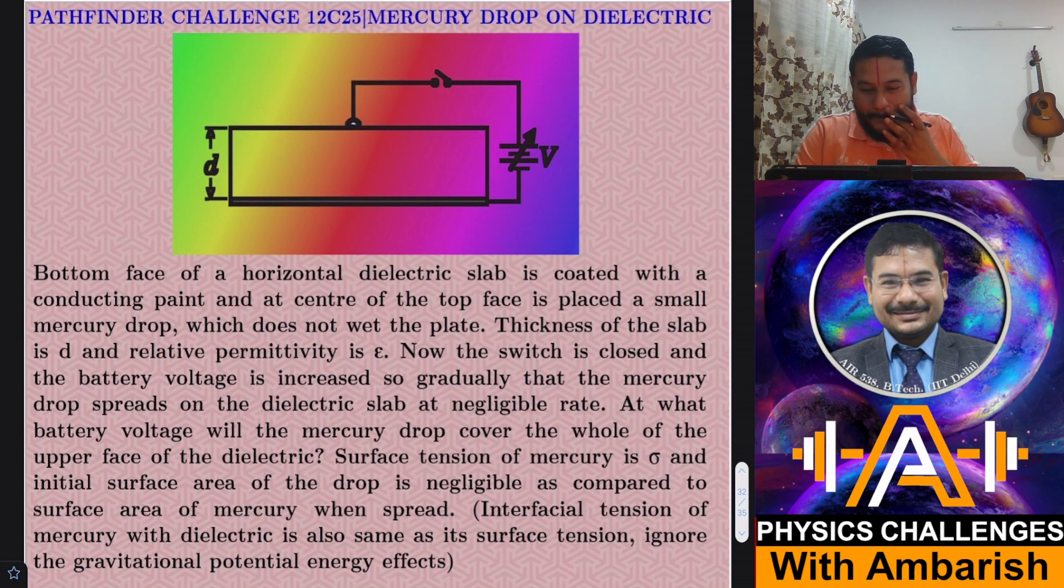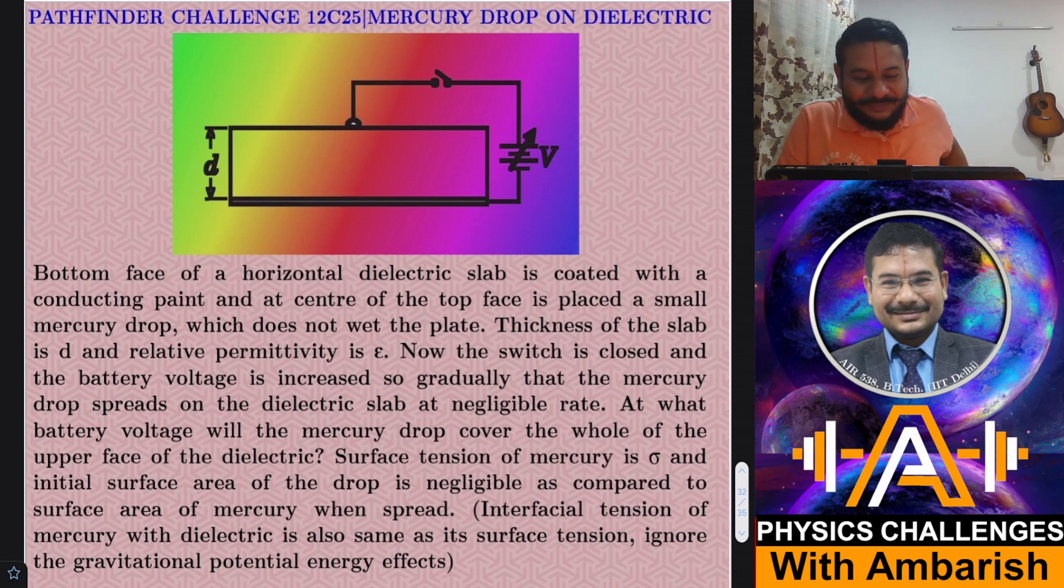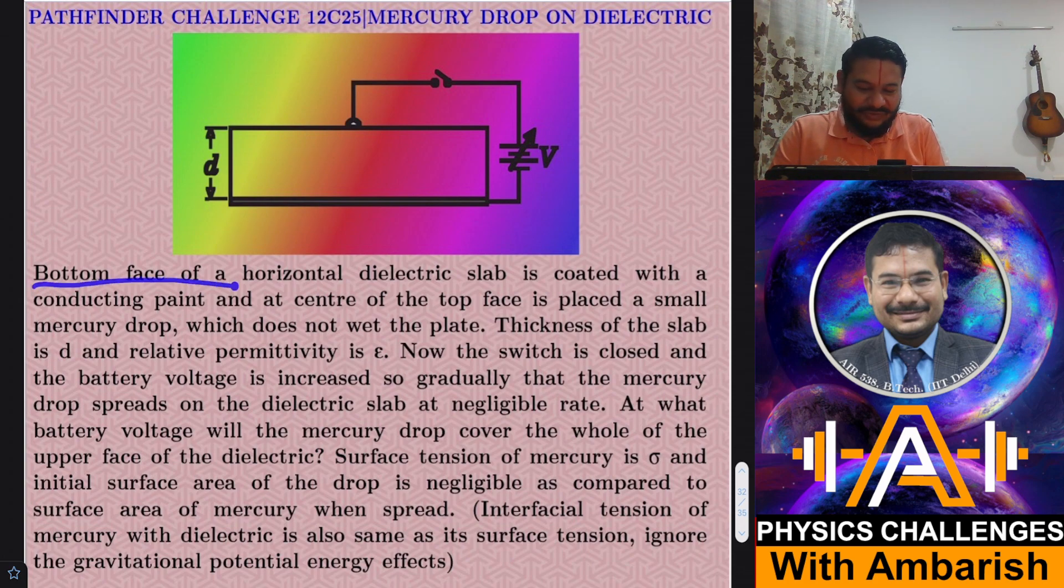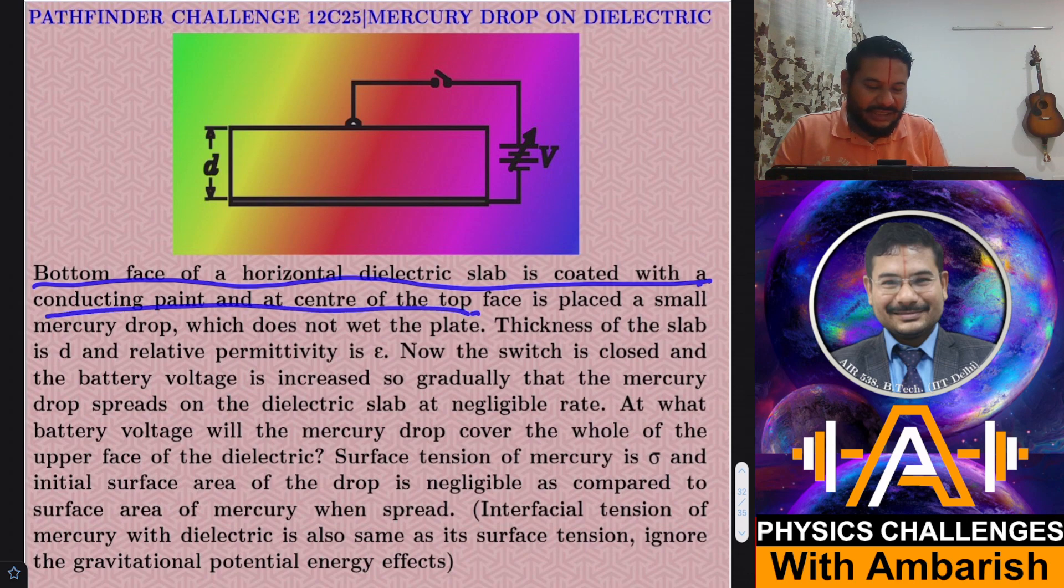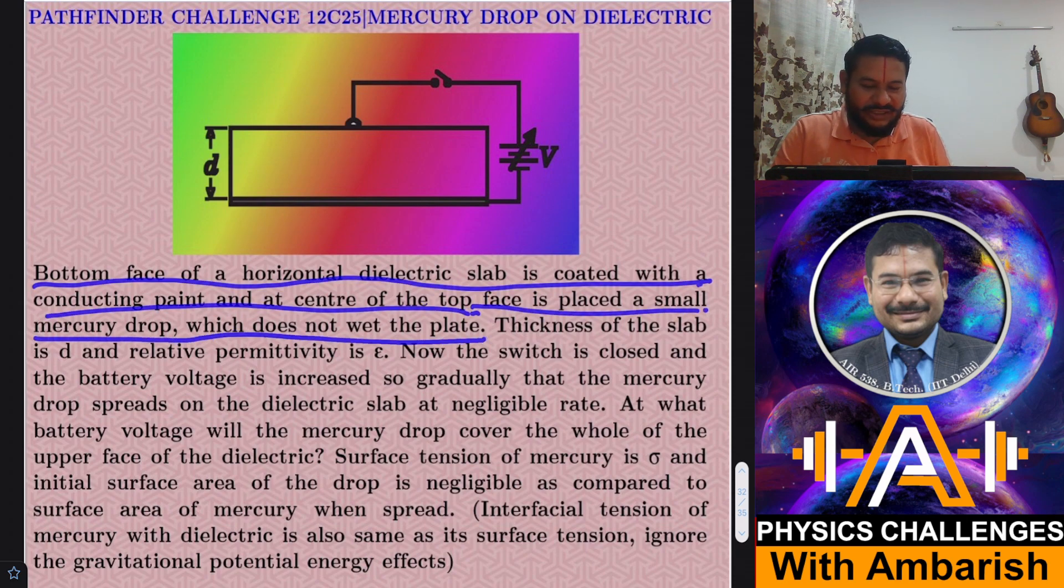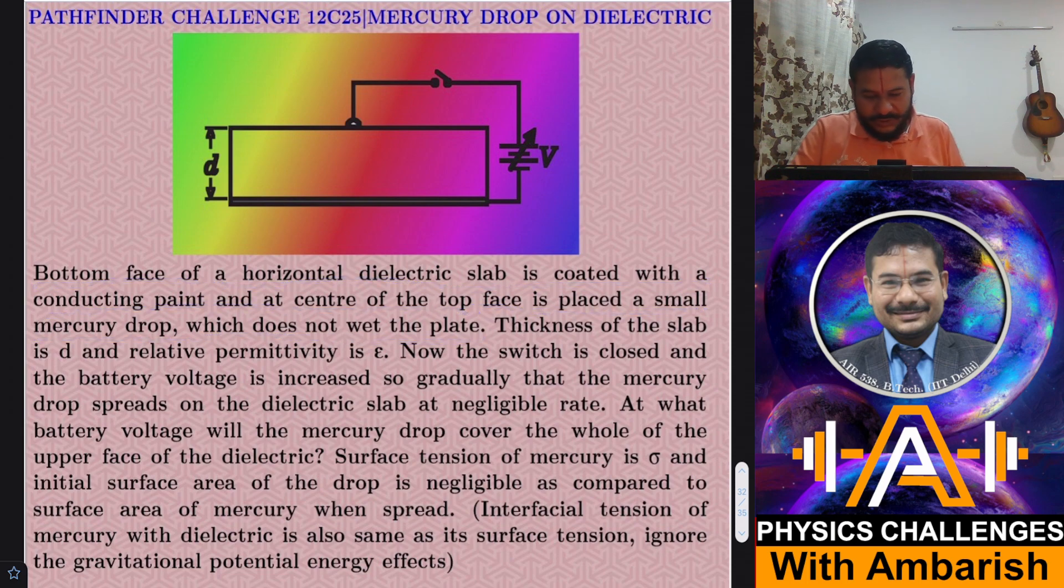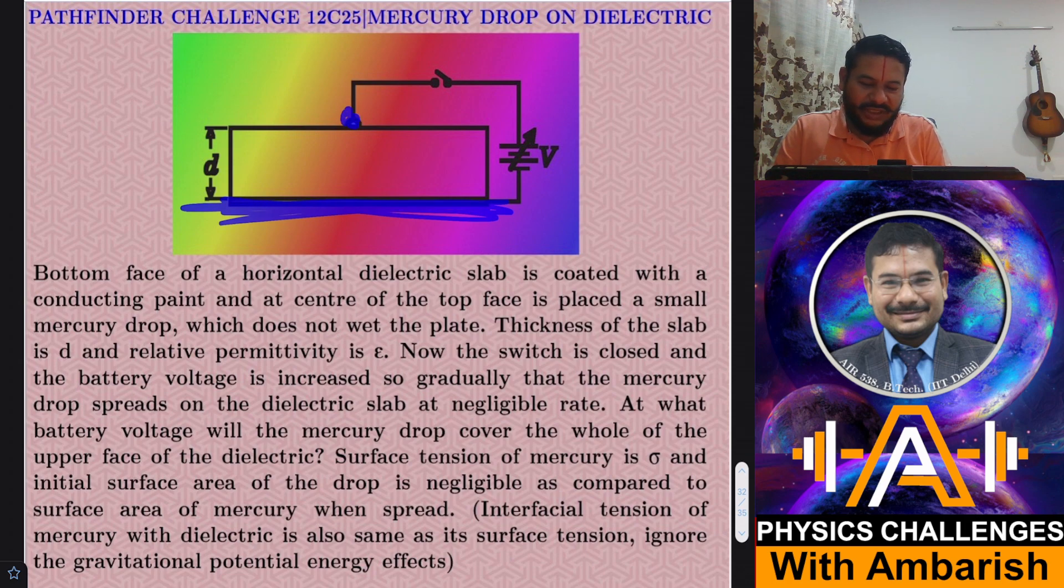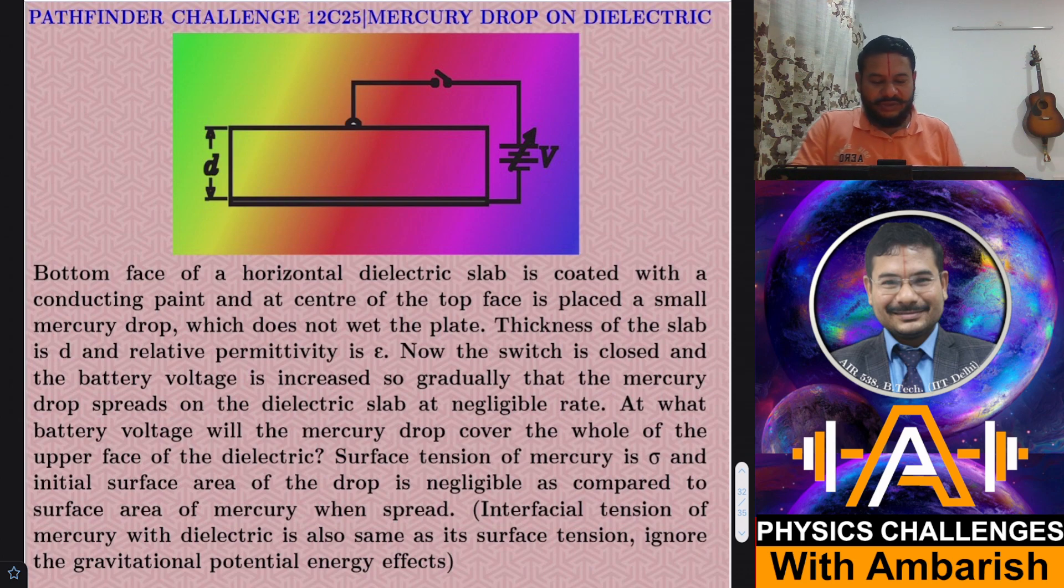So let me straight away get into the problem. So here's the problem. This is Pathfinder mercury drop on dielectric. So let's read out the problem. Bottom face of a horizontal dielectric slab is coated with a conducting paint and at the center of the top face is placed a small mercury drop, which does not wet the plate. So this is the bottom face and this is conducting and there's a small mercury drop over here. And we have connected a battery.